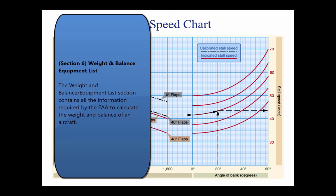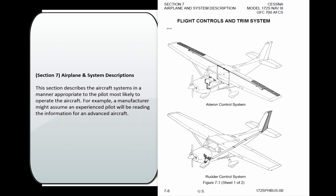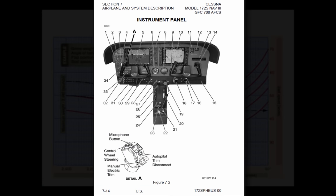Section 6: The Weight and Balance Equipment List section contains all the information required by the FAA to calculate the weight and balance of an aircraft. Section 7: This section describes the aircraft's systems in a manner appropriate to the pilot most likely to operate the aircraft. For example, a manufacturer might assume an experienced pilot will be reading the information for an advanced aircraft.